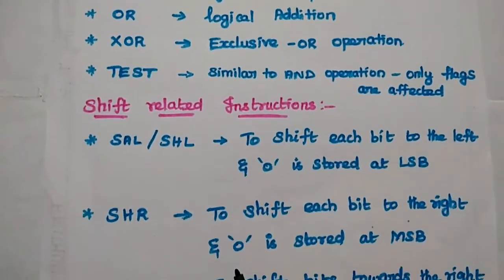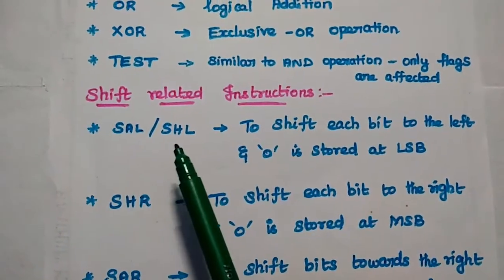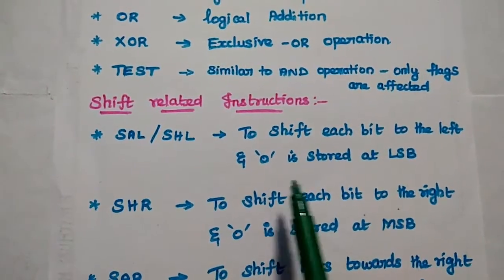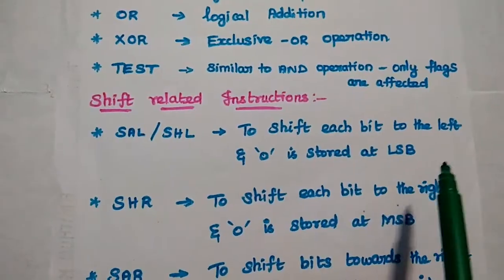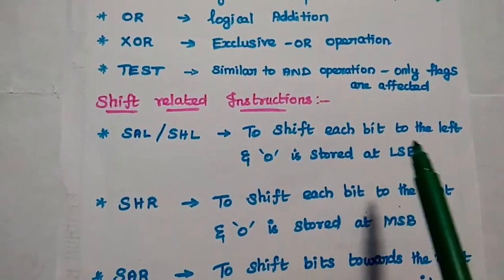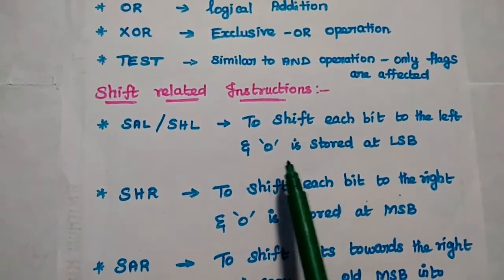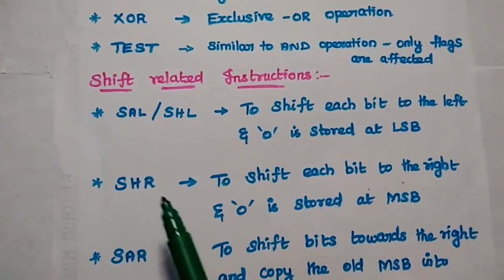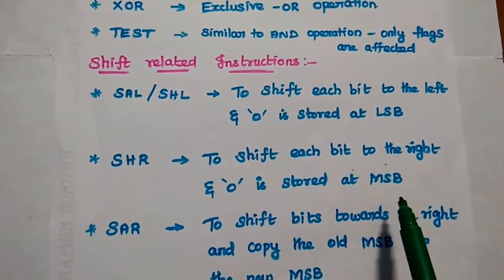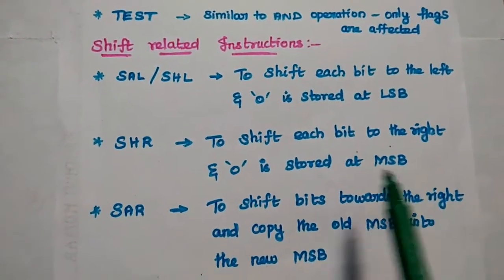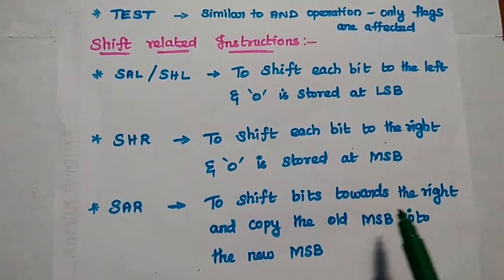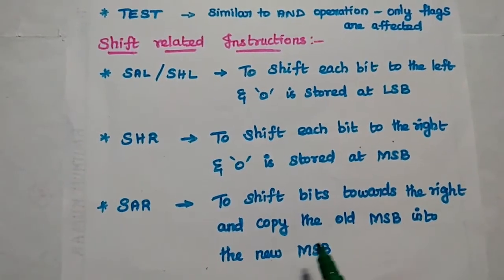Next are SHIFT-related instructions. SAL or SHL means to shift each bit to the left side and store 0 at the Least Significant Bit. In SHL, we simply shift each bit to the left and put 0 in the LSB. SHR shifts each bit to the right side and puts 0 at the MSB (most significant bit). SAR shifts bits to the right side and copies the old MSB into the new MSB — that is the difference between SHR and SAR.